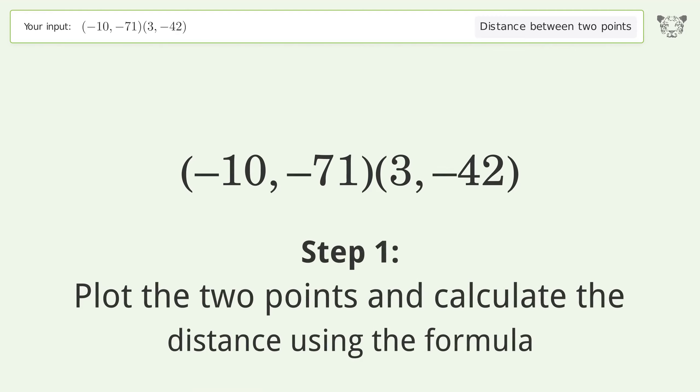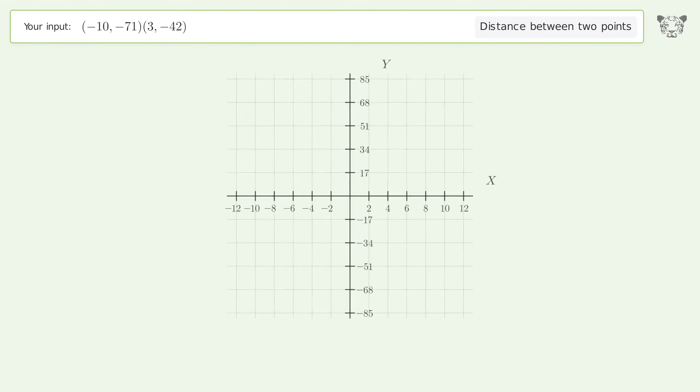Using the distance formula, the coordinates of point one are x₁ = -10 and y₁ = -71. The coordinates of point two are x₂ = 3 and y₂ = -42.